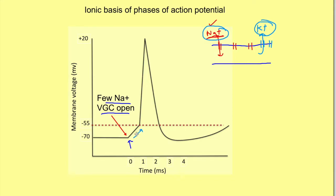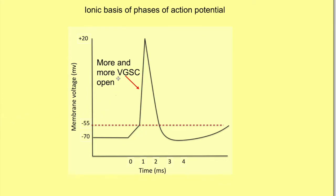However, if the stimulus strength is adequate — that is, it is a threshold or suprathreshold stimulus — and the potential change reaches the threshold, then at that stage a lot of voltage-gated sodium channels start opening. At the threshold, the probability of opening of these voltage-gated sodium channels suddenly increases, and more and more sodium channels open, causing more and more entry of sodium ions. So there is almost an explosive entry of sodium ions which leads to a sudden depolarization phase — almost a spike.